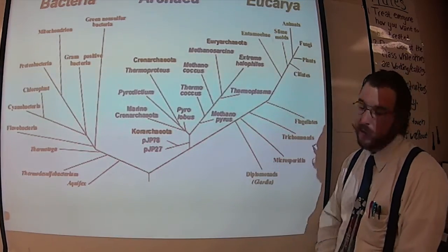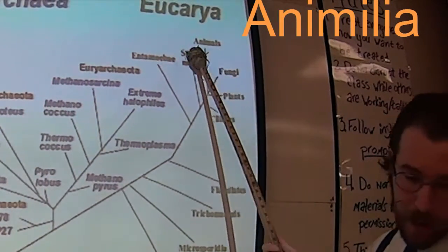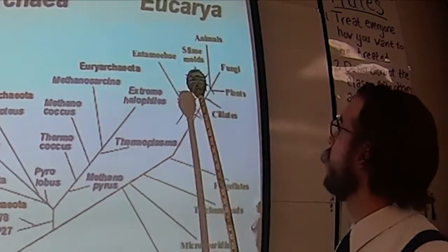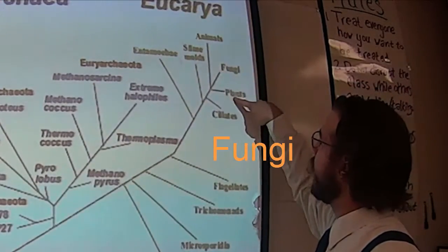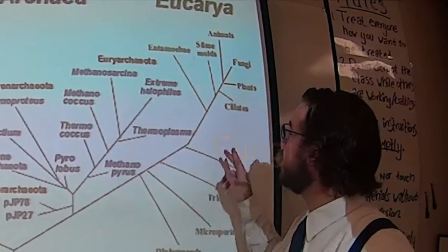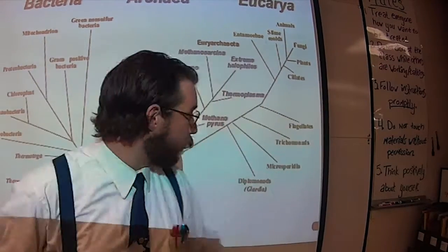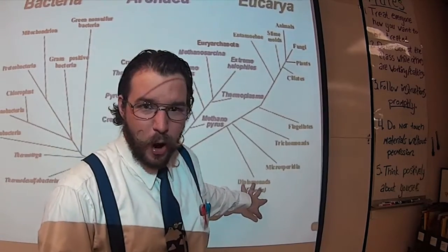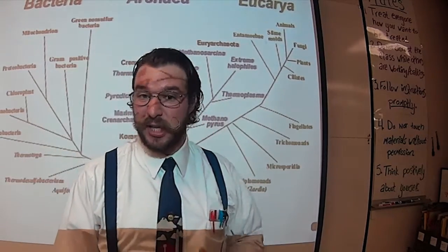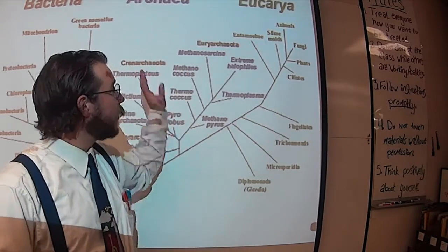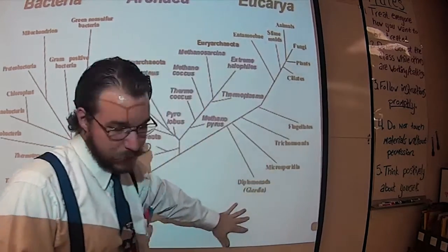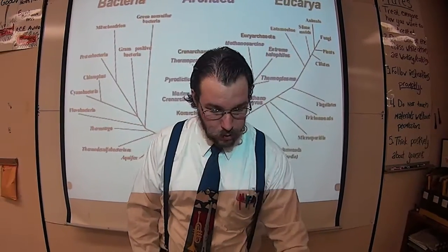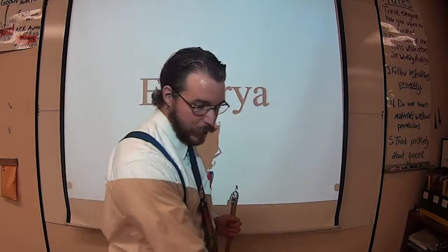In this system, here are the kingdoms: Animalia — the animal kingdom. Plantae — all your plants. Fungi — we're actually very closely related to fungi compared to plants. And Protista — these really basal lower-level organisms, like Giardia, a waterborne parasite. Animalia, Plantae, Fungi, Protista — those are all part of domain Eukarya.